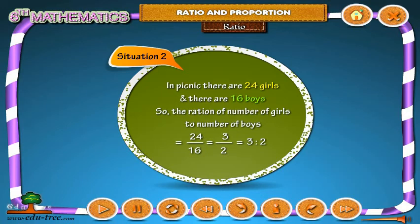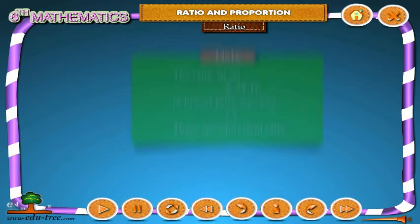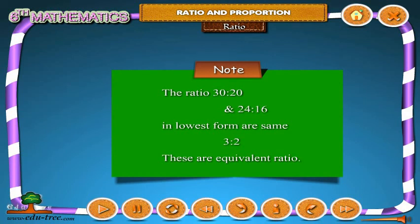Situation 2: In a picnic, there are 24 girls and 16 boys. So the ratio of number of girls to number of boys is 24 by 16, which equals 3 by 2, which equals 3 ratio 2. Students, please note: the ratios 30 ratio 20 and 24 ratio 16 in their lowest form are the same — 3 ratio 2. These are equivalent ratios.